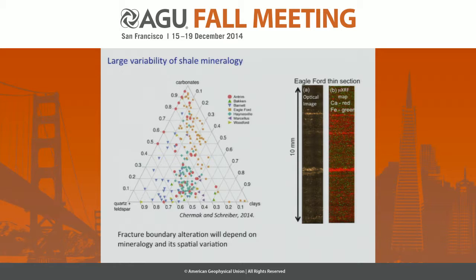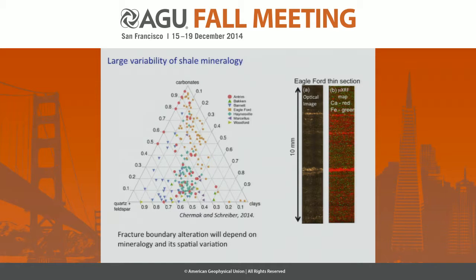Not only in the bulk case, but here you see the Eagleford thin section — and this is from the same rock that I'll be showing you experimental results from — there is a clear spatial distribution. These are high carbonates, the Eaglefords, as many of you know. You can see these red calcite layers, but calcite is distributed throughout.